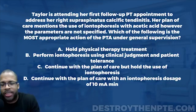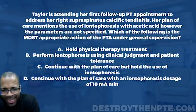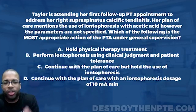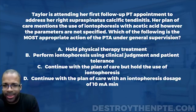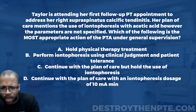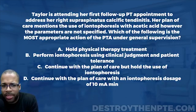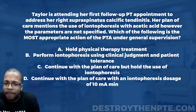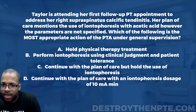As we continue down the line, it says her plan of care mentions the use of iontophoresis with acetic acid. I like that because iontophoresis with acetic acid can be used for calcific tendinitis — so all that fits and makes a lot of sense.